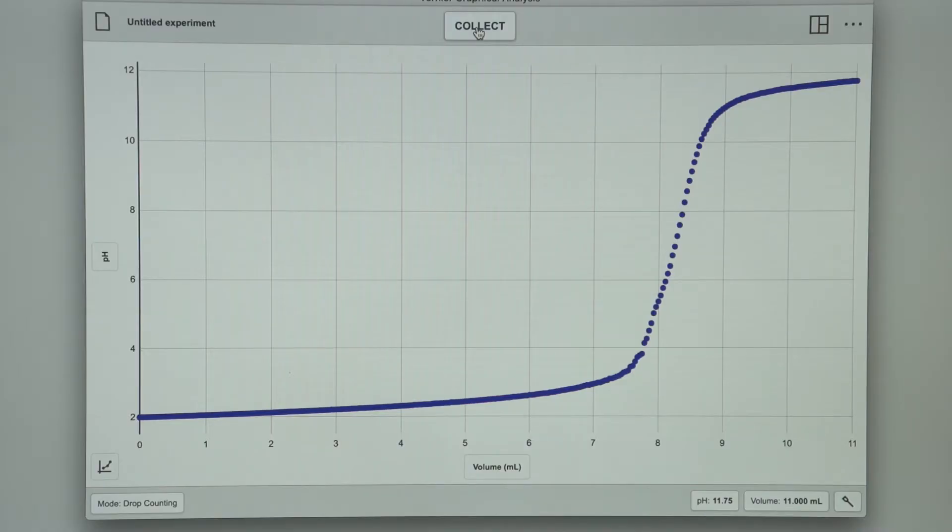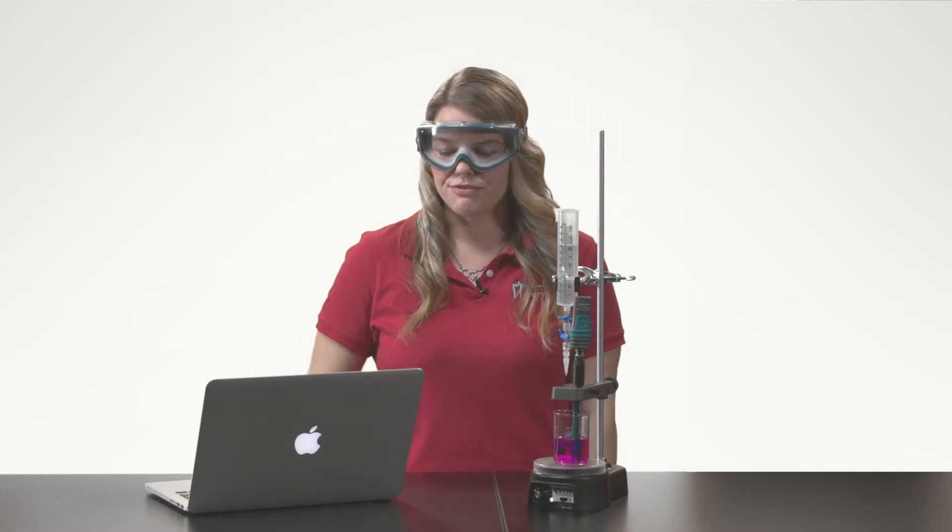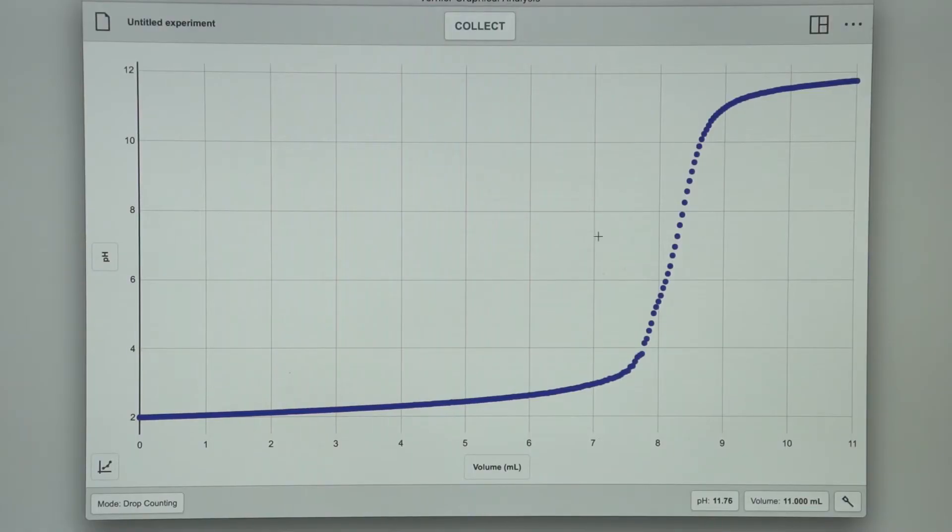Now I have a little bit of work to do to determine the equivalence point. I have a few different options for determining this. First, I can tap along the graph and find the volume where the pH changes most dramatically.